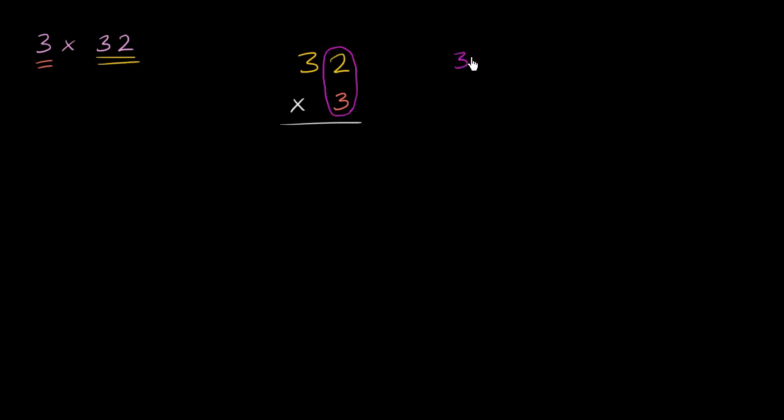Well, 3 times 2 from our multiplication tables, and you can figure it out even if you didn't know your multiplication tables, is 6. So 3 times 2, I'll write 6 right over here in the ones place.